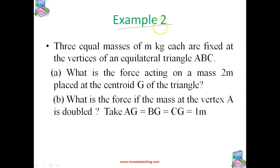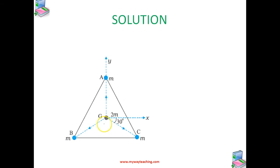Let us solve a simple problem, Example 2. Three equal masses of M kg each are fixed at the vertices of an equilateral triangle ABC. The question is, what is the force acting on a mass 2M placed at the centroid G of the triangle? What is the force if the mass at the vertex A is doubled? Take AG is equal to BG is equal to CG is equal to 1 meter. Now we should find the force which is acting at the centroid. And even we should find the force if the mass at the vertex A is doubled. Let us find the solution for this.